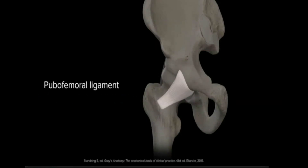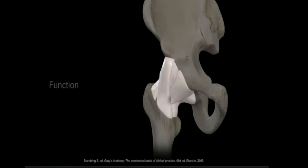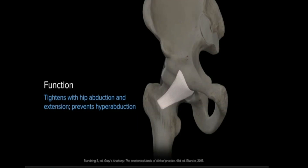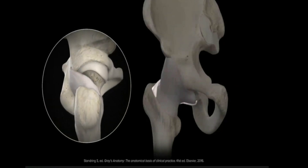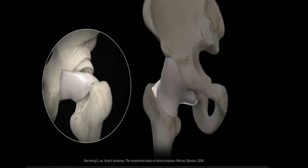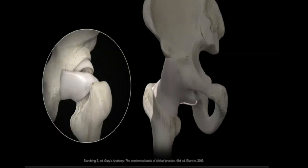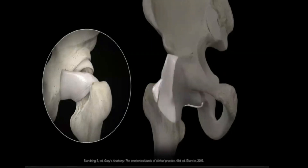The pubofemoral ligament, positioned anteroinferiorly, attaches proximally along the iliopubic eminence, obturator crest, and superior pubic ramus to distally where it merges with the deep fibers of the vertical band of the iliofemoral ligament and the hip capsule. It functions to prevent excessive abduction and extension of the hip joint. The triangular band of fibers forming the ischiofemoral ligament spans centrally from the ischium superolaterally and attaches to the acetabulum posteroinferiorly before coursing distally and merging with the posterior hip capsule posterior to the femoral neck and attaching to the greater trochanter. This attachment is deep to the iliofemoral ligament.